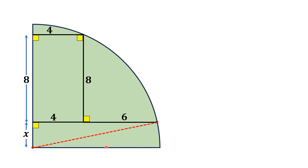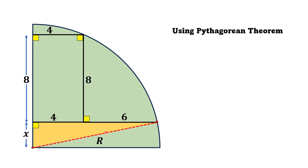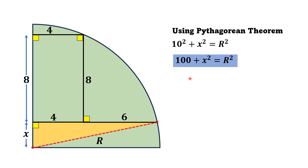Let us call it capital R. Now from here we can see there is a right triangle — the yellow shaded one — and its hypotenuse is R, one leg is x, and the other leg is four plus six, that is 10. So using the Pythagorean theorem on this right triangle we have x² + 10² = R², which simplifies to 100 + x² = R².